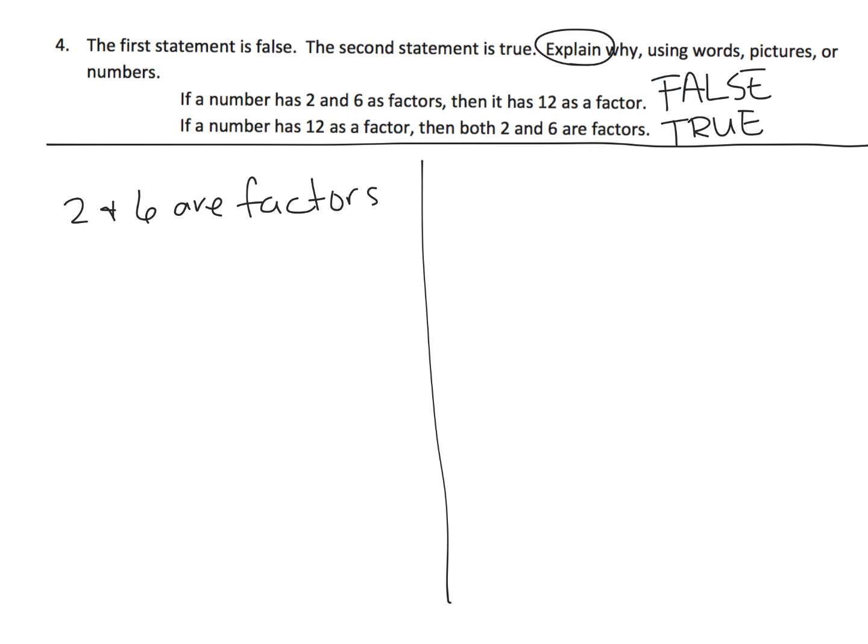So if a number has 2 and 6 are factors, does that mean 12 is always a factor automatically? Well, if 2 and 6 are factors, an example of that would be 6 is an example of that, because 2 goes into 6 and 6 goes into 6.